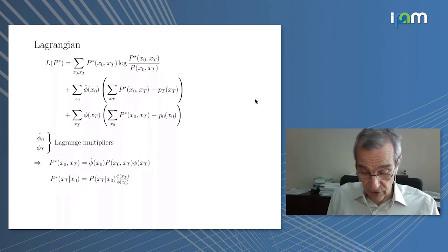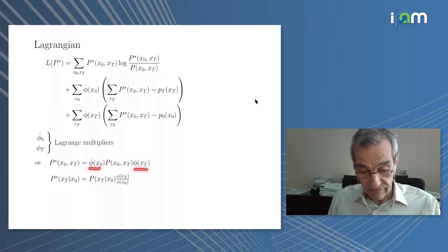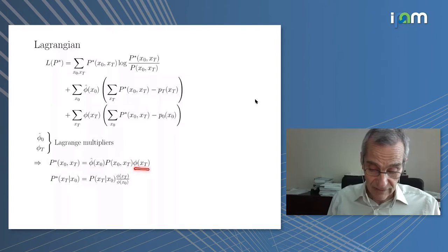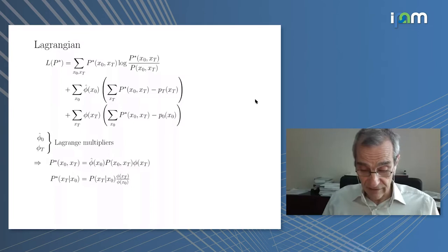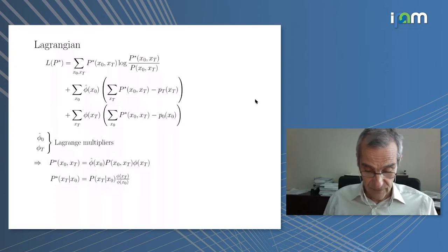When you solve the problem, the new joint distribution between the states at the beginning and end of the interval is basically the prior scaled by multiplicative factors to the left and right. This is what's called diagonal scaling because if you think of this as a matrix, then basically you multiply with a diagonal on the left and diagonal on the right that is formed out of the vector of phi and phi hat. The transition probability, the corrected one, is again some diagonal scaling to the left and right.